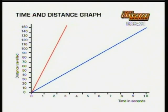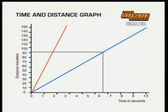The actual speed is the slope of the graph — the distance divided by the time — in kilometres per hour or metres per second.